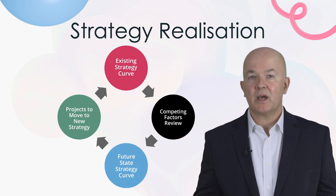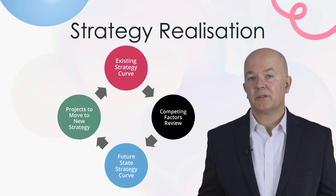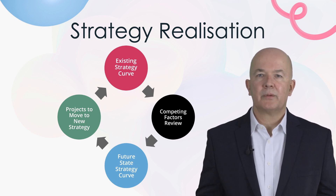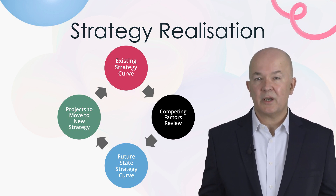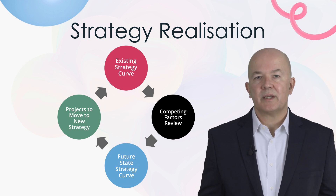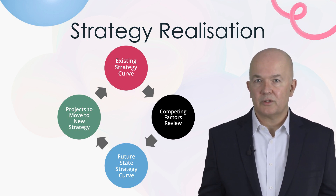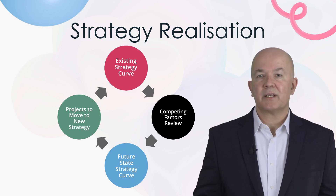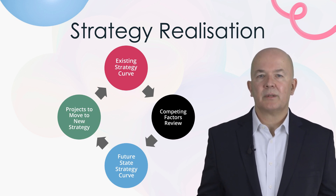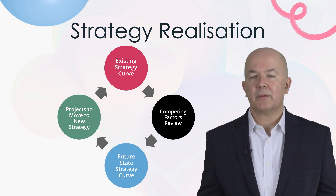The final step is to begin realizing your strategy. There are four parts to this: your existing strategy curve, your competing factors review, your future state strategy curve, and identifying projects to move to a new strategy. For the existing strategy curve you need to compare your business with competitors by drawing your as-is strategy curve, and see where your strategy needs to change to differentiate yourself and better meet the needs of the customer. Then, as part of your competing factors review, observe the distinctive advantages of alternative products and services and identify which factors you should eliminate, reduce, raise, create, or change. Then you can draw your future state strategy curve based on insights from your field observations. You can get feedback from customers, competitors' customers, and non-customers, and use the feedback to build the best-to-be future strategy.